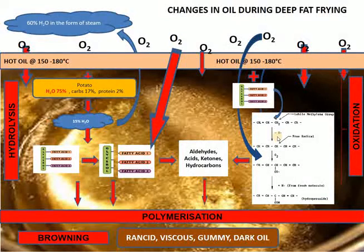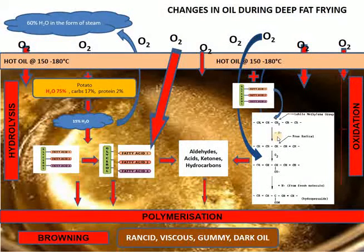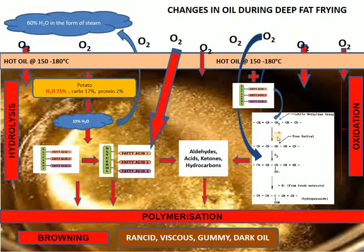Do those changes affect the quality of the product? Do they affect nutritional quality, or does the oil become toxic to human beings? By going through this, we are going to understand that you can select certain types of lipids for frying, because you will be preventing such and such a chemical reaction.